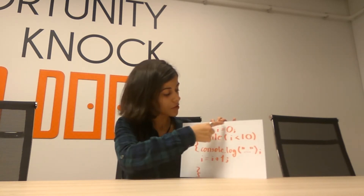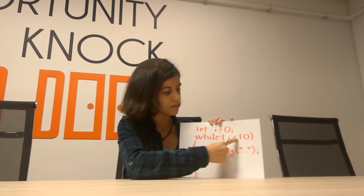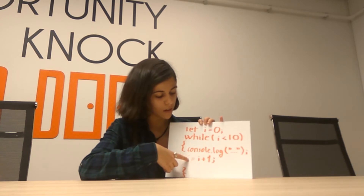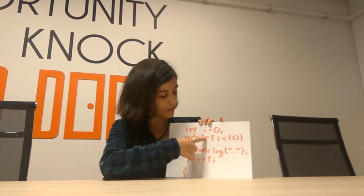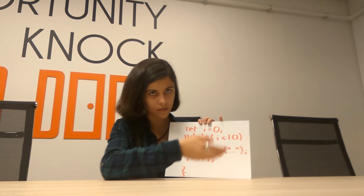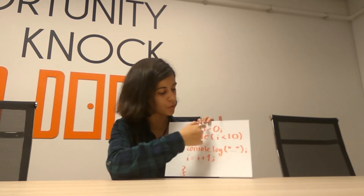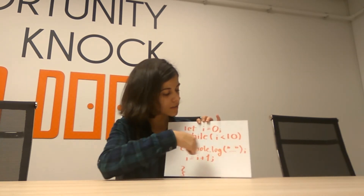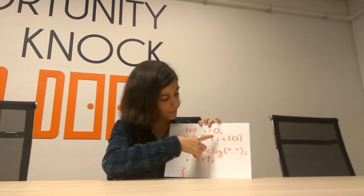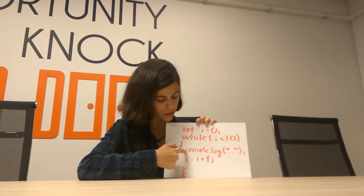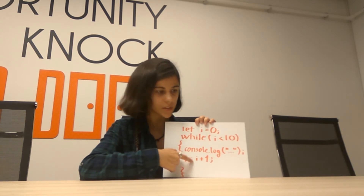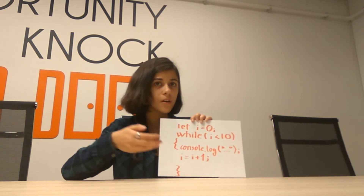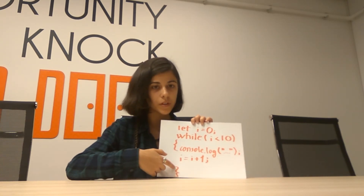What this code does is repeat that set of code ten times. The first time, i will be zero — it checks if it's smaller than 10, it's true, so it does the code, adds one to i, then checks again. It's one, still smaller than 10, does the same. This continues until i is nine. It becomes 10, and the next time it checks if i is smaller than 10, it's false — so it exits the loop and continues the rest of the code.